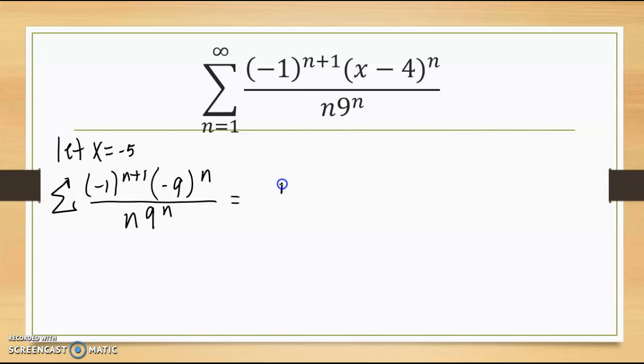I'm going to do a little reorganizing here. This gives me negative 1 to the n plus 1 times negative 1 to the n times 9 to the n. So again, using some exponent rules.